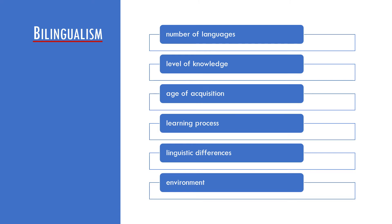For example, the level of knowledge of the languages. One language may be dominant and better known, but there are also cases of the so-called balanced bilingualism, when the two languages are acquired on the level of a native speaker.